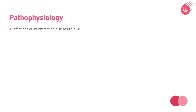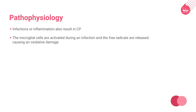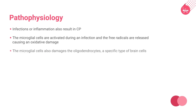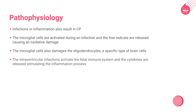Infections or inflammation may also trigger cerebral palsy. The microglial cells are activated during an infection, and free radicals are released, causing oxidative damage. These microglial cells also damage the oligodendrocytes, a specific type of brain cells. The intraventricular infections activate the fetal immune system, and cytokines are released, stimulating the inflammation process.